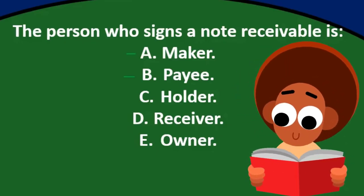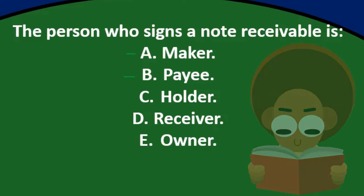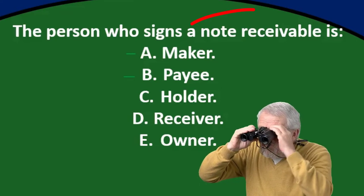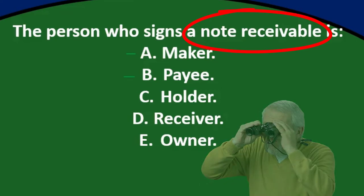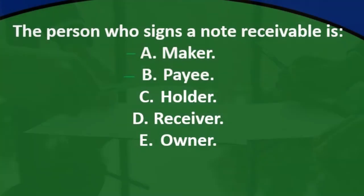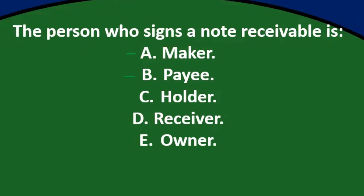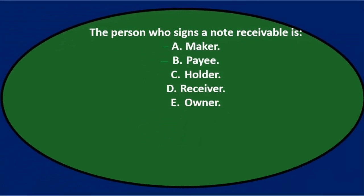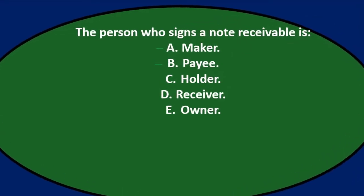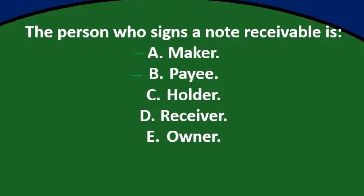We'll go through this with the process of elimination. The person who signs a note receivable — now, if we look at a note receivable, you might think both parties should sign it, but typically it's only required for one individual to sign. The note receivable is basically a promise — an individual promising to pay in the future.